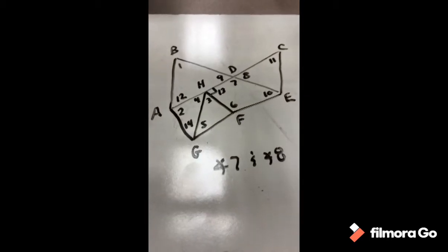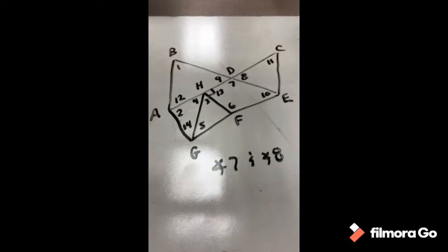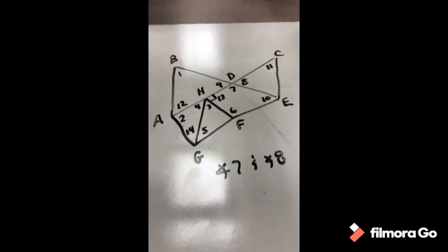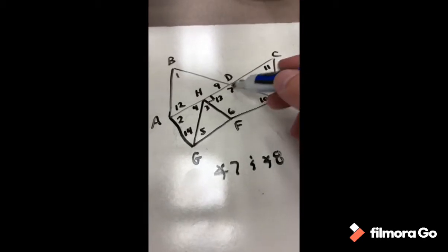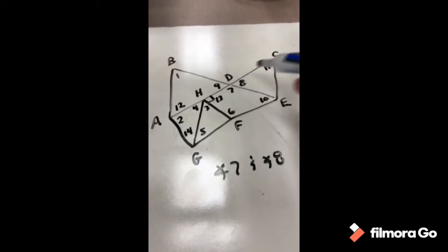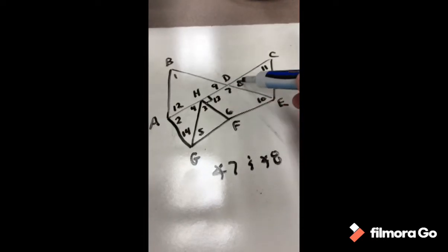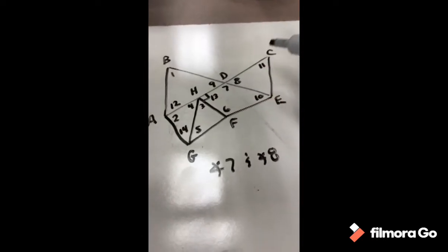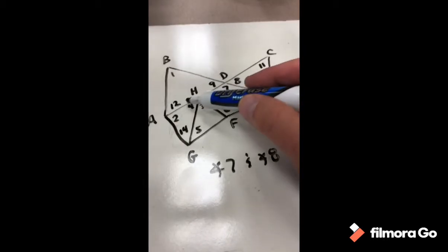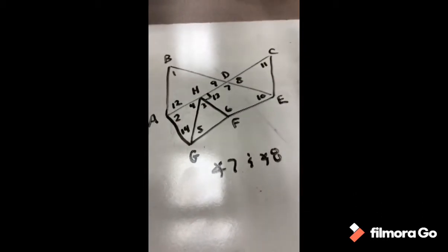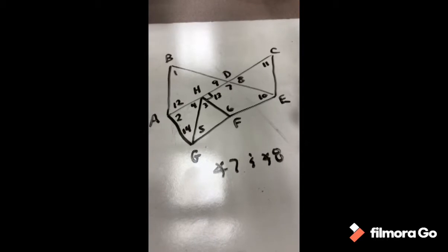Using the same picture, what is the relationship between angle 7 and angle 8? Angles 7 and 8 are next to each other, so they are adjacent. Because they make a straight line, they form a linear pair, and a straight line equals 180 degrees, so we would also say these two angles are supplementary.